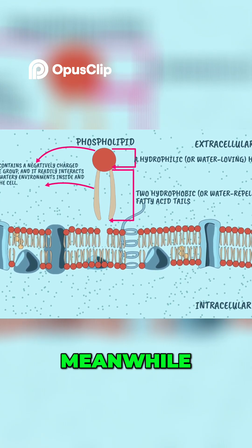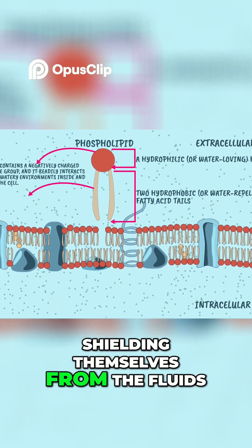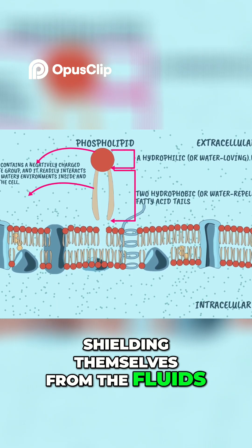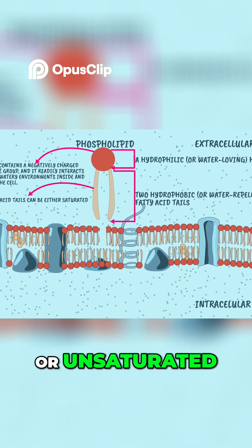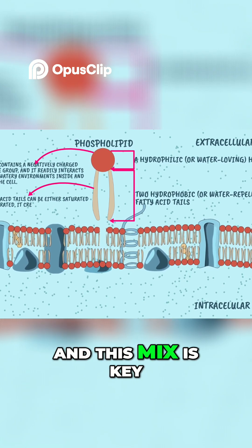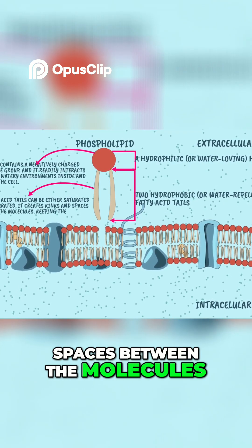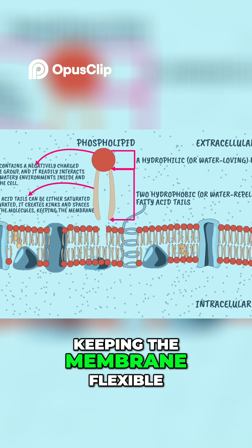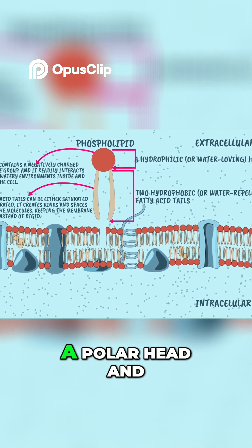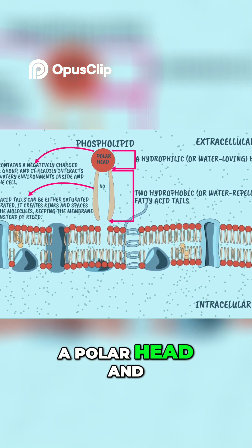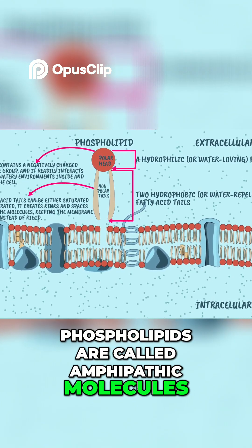Meanwhile, the tails avoid water, pointing inward and shielding themselves from the fluids. The fatty acid tails can be either saturated or unsaturated, and this mix is key — it creates kinks and spaces between the molecules, keeping the membrane flexible instead of rigid. Because of this dual nature, a polar head and nonpolar tails, phospholipids are called amphipathic molecules.